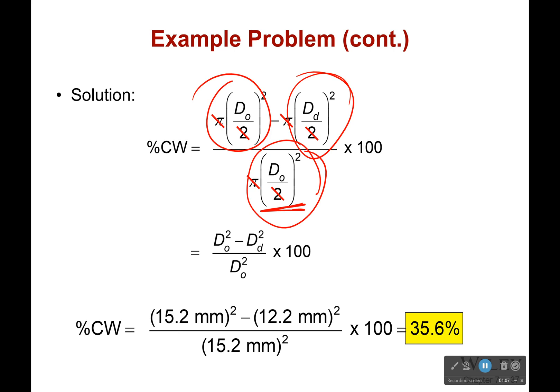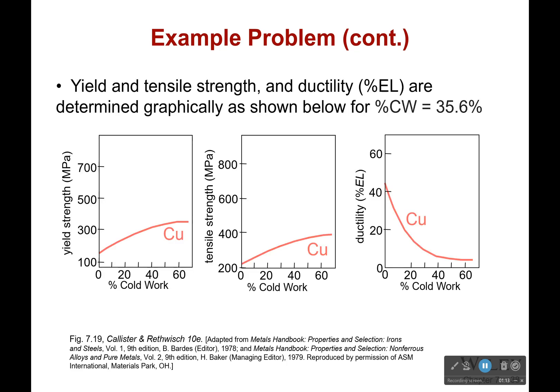Now you're wondering: how does that tell me what the yield strength, tensile strength, and ductility are at this point? Well, it doesn't. You have to look at a table. When you look at this table, you're going to go to the percent cold work that you've found — 35.6 — and go straight up from there, somewhere around here. I'll drag a line up and over, and I'd say that's around 300 MPa.